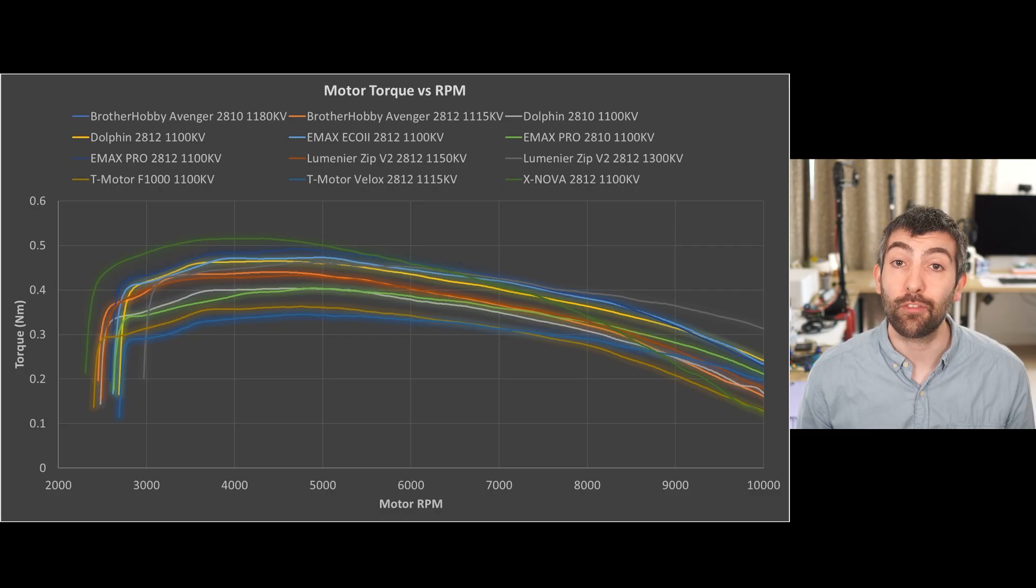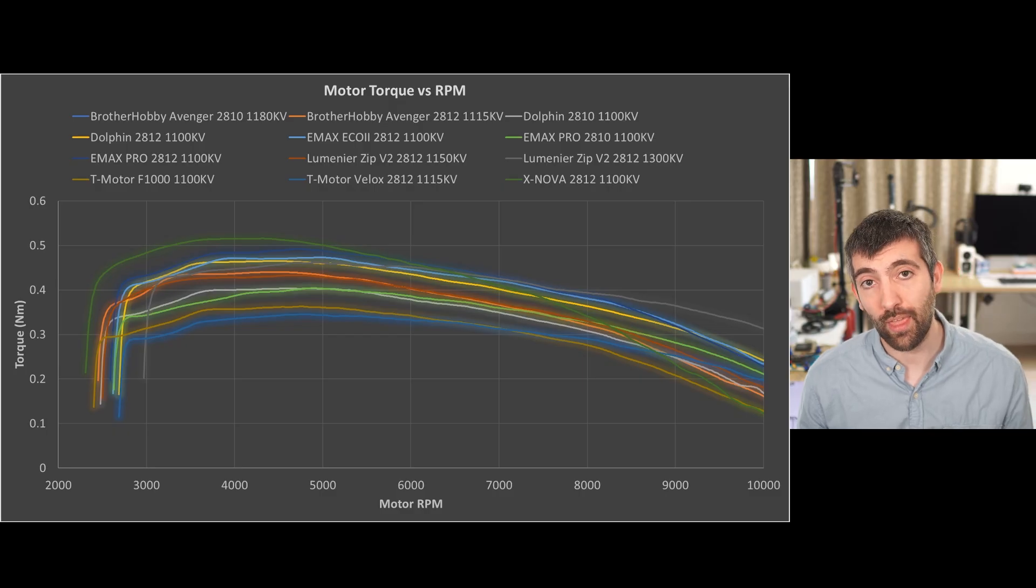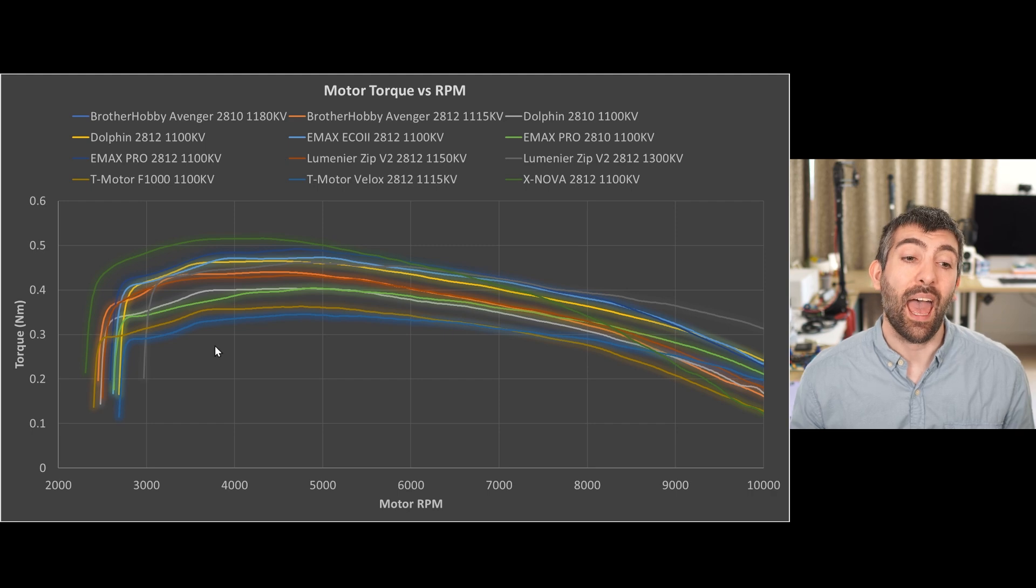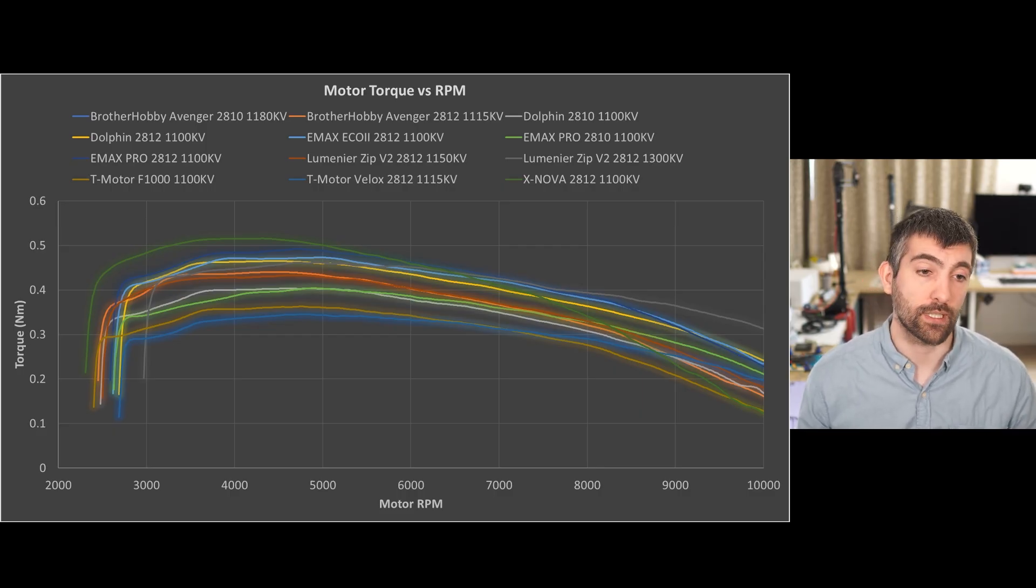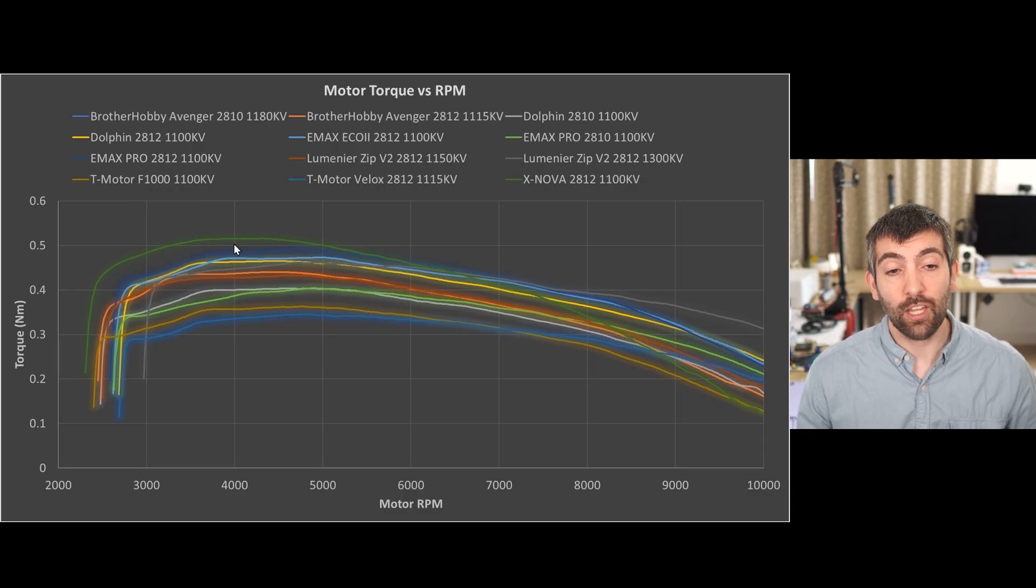The final test I want to show you is the flywheel acceleration test. Here we are accelerating a flywheel from about two and a half thousand to ten thousand RPM as quickly as possible by stepping from 10 to 50% throttle on the motor. This is a good measure for how much maximum mechanical torque the motor can generate when it's spinning up an inertial load. This gives you a great idea of how much flux the motor is able to generate in the air gap and therefore what the peak torque performance of the motor is like. The Xnova 2812 is coming out top of this test generating over 0.5 newton meters of torque in that acceleration. You can see that it's able to generate a lot of torque at low RPMs but then because it's got a low kV, that torque falls off rapidly at higher RPMs.